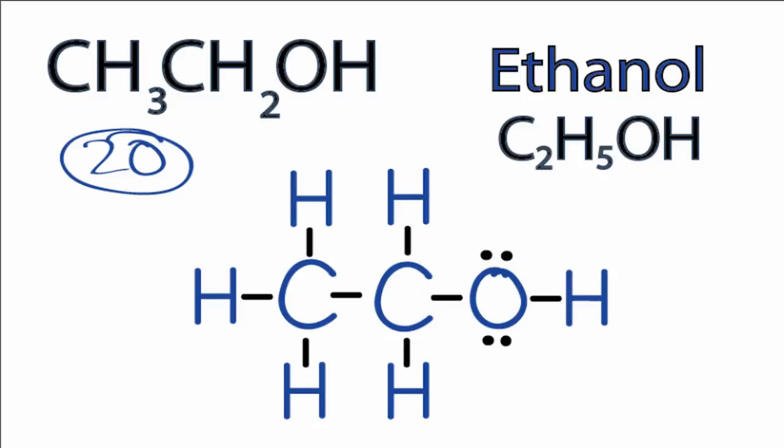So we've used all 20 valence electrons and fulfilled the outer shells for each of the atoms. This is the Lewis structure for CH3CH2OH, ethanol, or C2H5OH.